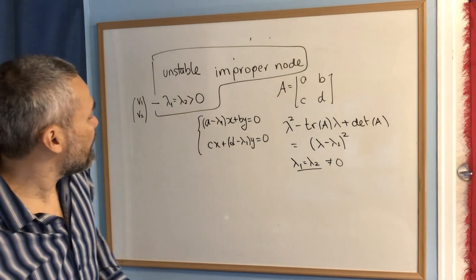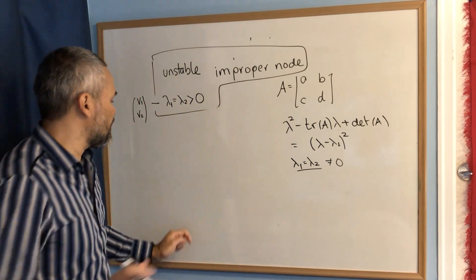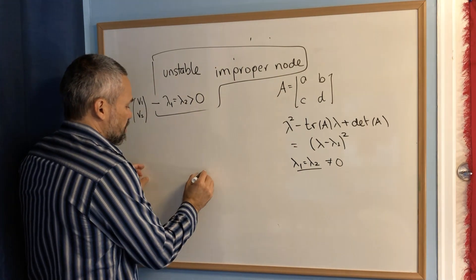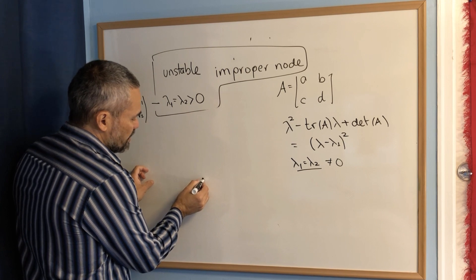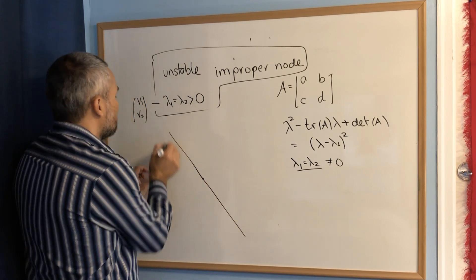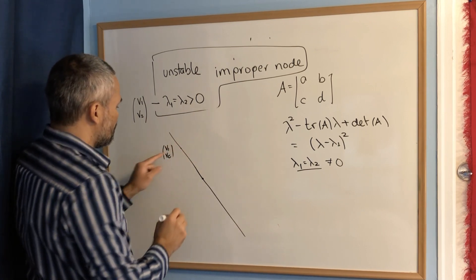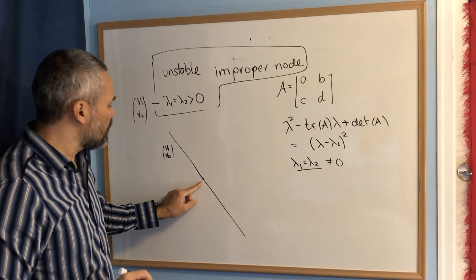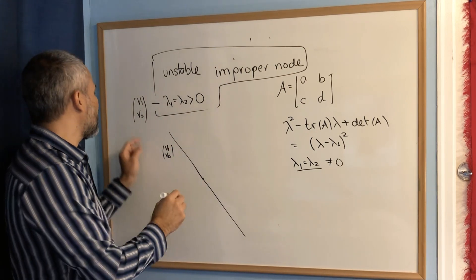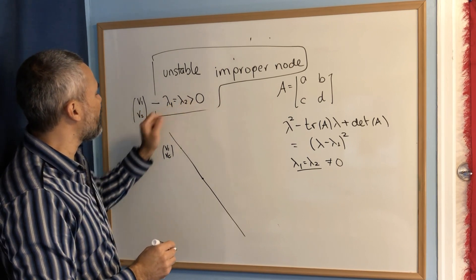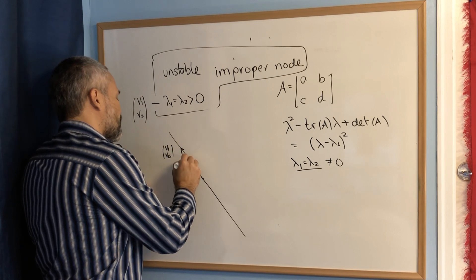With that eigenvector, as in the other cases, we start doing the phase portrait. We draw the origin (0, 0), then we draw this line using the vector (v₁, v₂). We connect the point (v₁, v₂) with the origin and get two semi-lines, each of which is an orbit. Since we are assuming λ₁ is greater than zero, we draw the arrows going out from the origin.